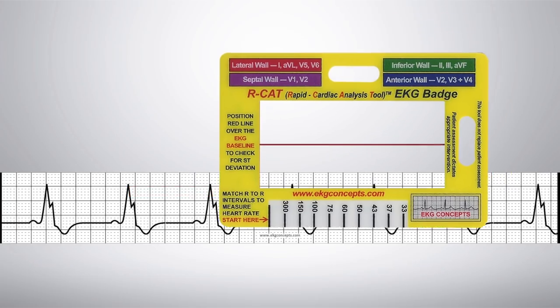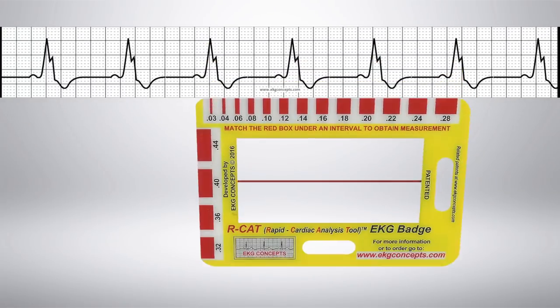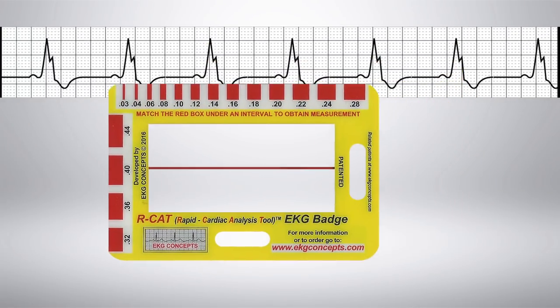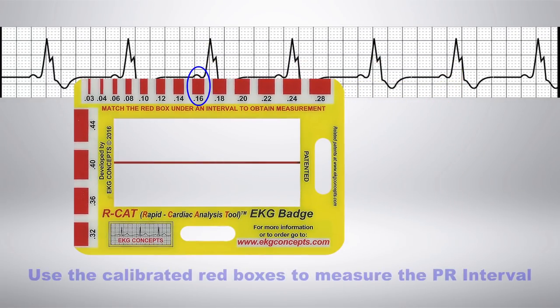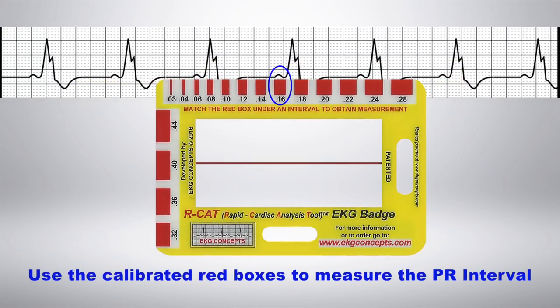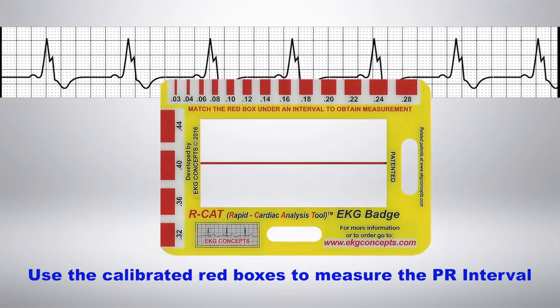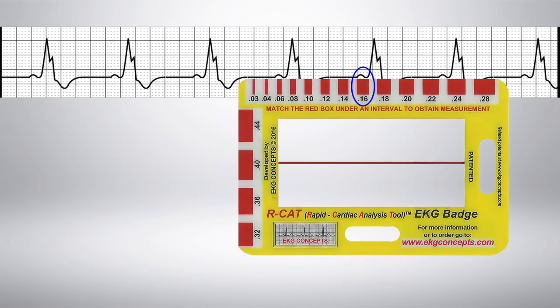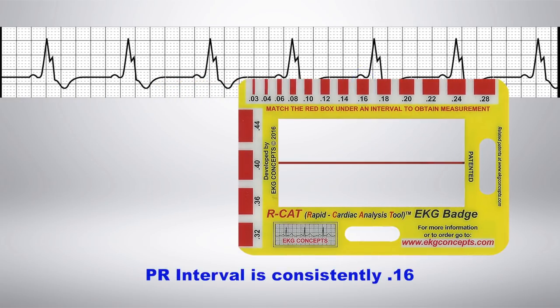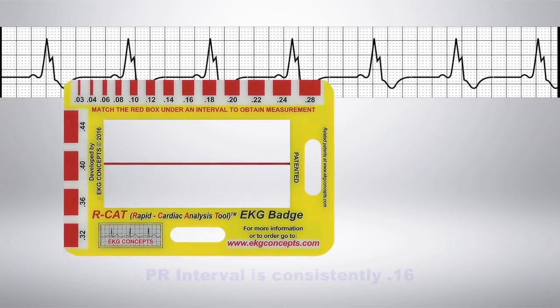Now, turn the EKG badge over and use the calibrated red boxes to measure the PR intervals. You have a PR interval that's consistently 0.16.